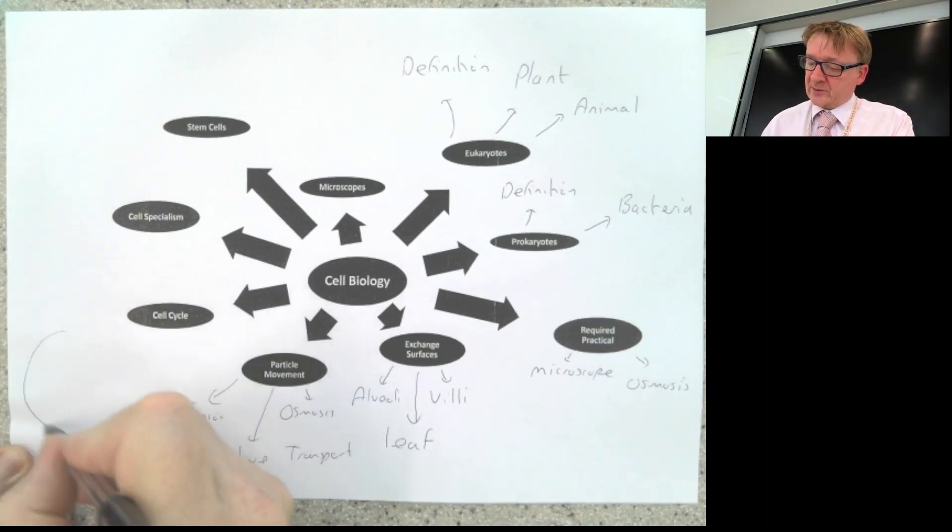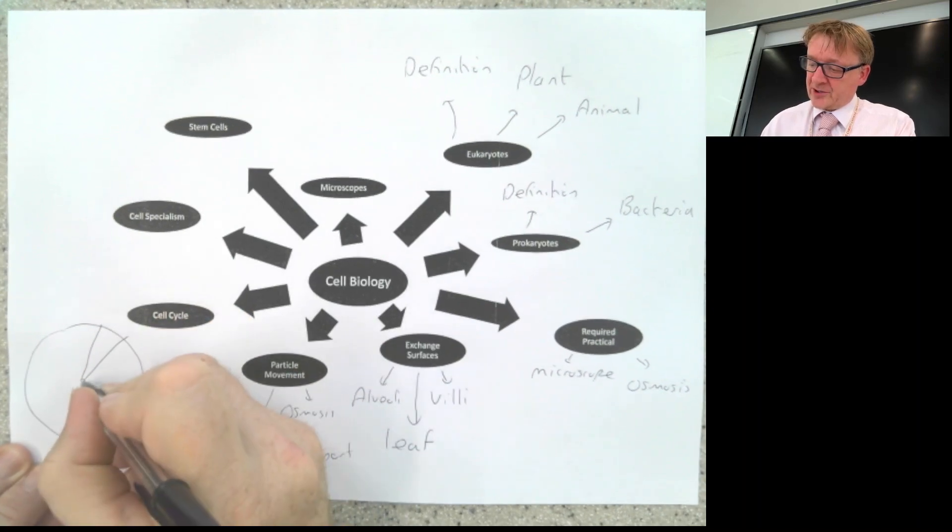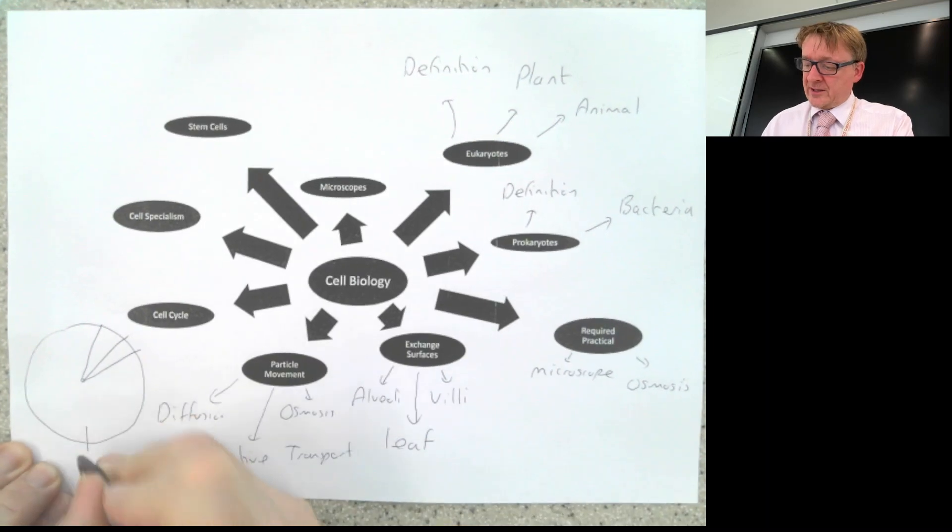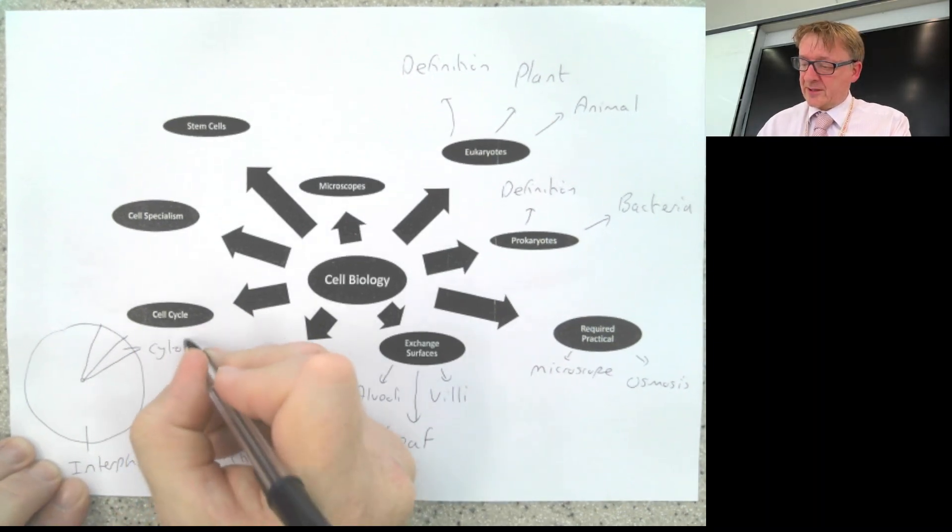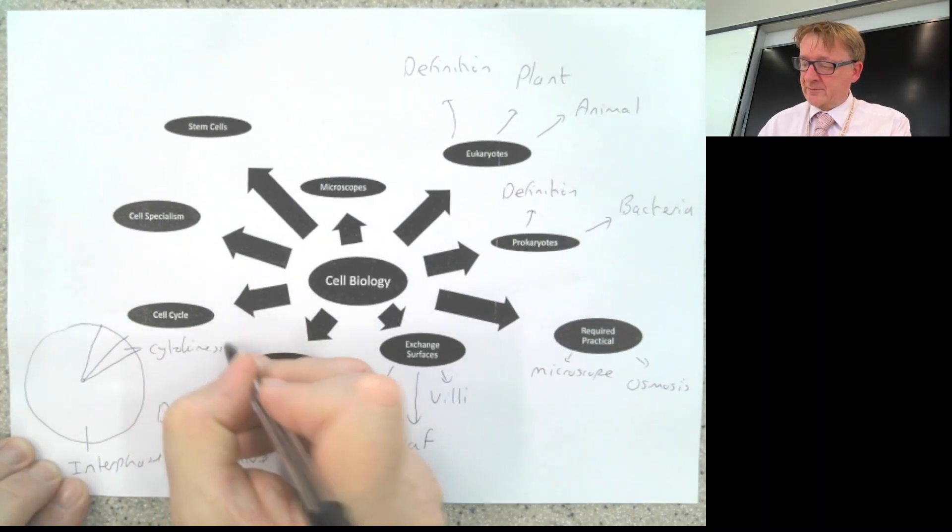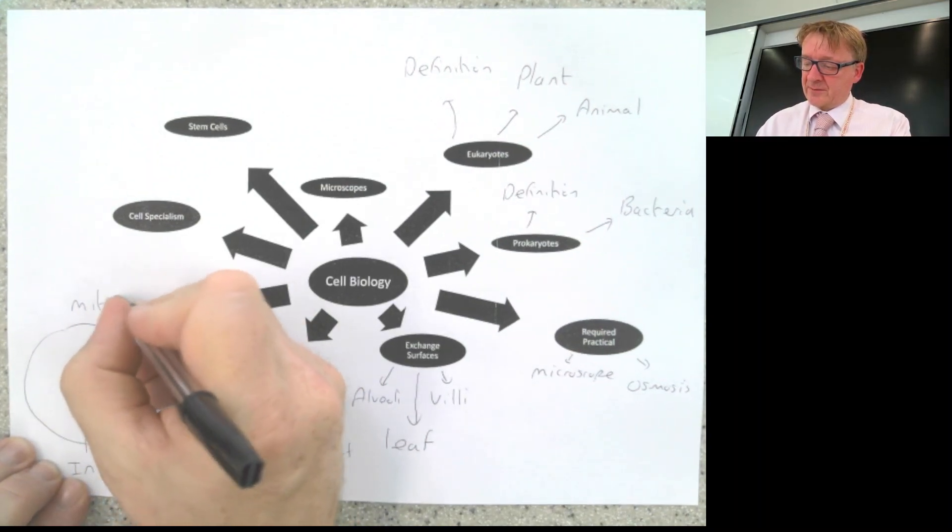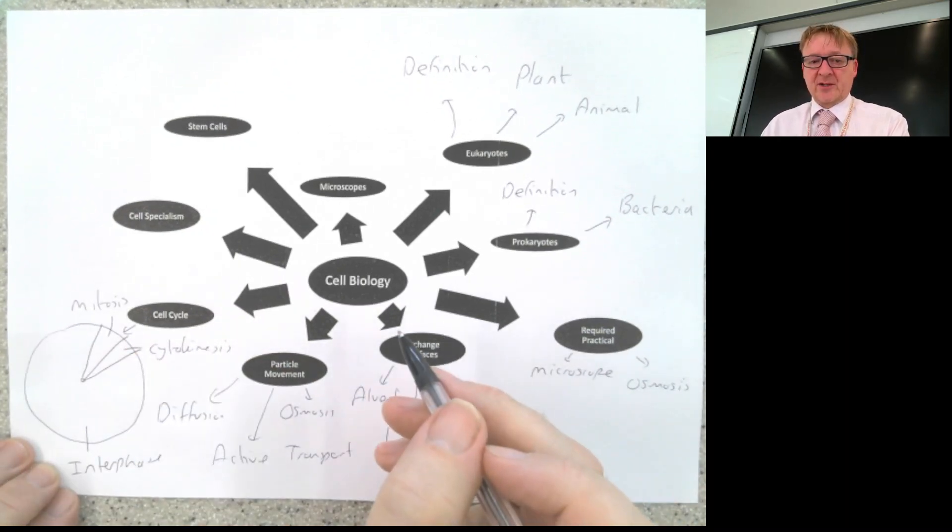Cell cycle. We've got our pie chart, and we split it up into three sections. This section is interphase, this section is cytokinesis, and this section is mitosis. You need to know what happens in each one of those parts of the cell cycle.